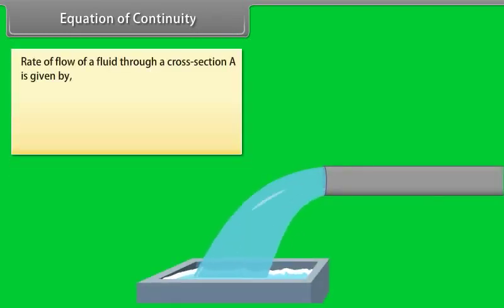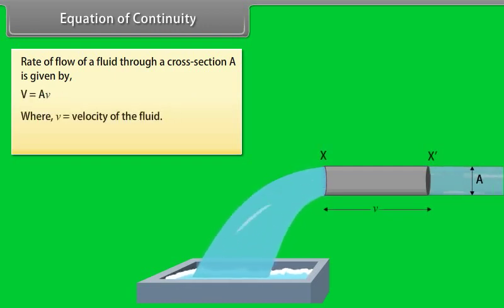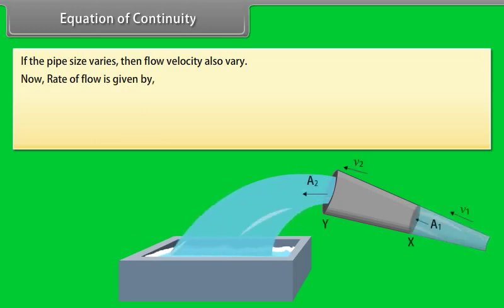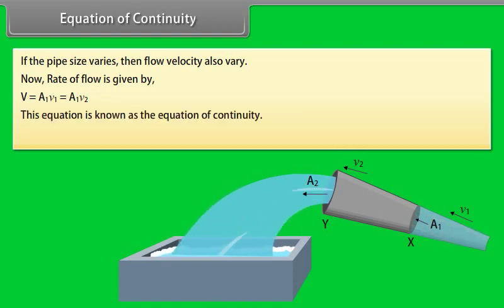The rate of flow of a fluid through a cross-section A is given by V = Av, where v is the velocity of the fluid and V is the volume of the fluid. If the pipe size varies, the flow velocity also varies. The rate of flow is given by A₁V₁ = A₂V₂. This equation is known as the equation of continuity.